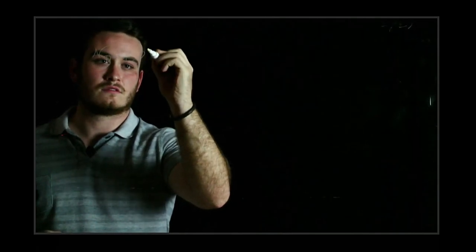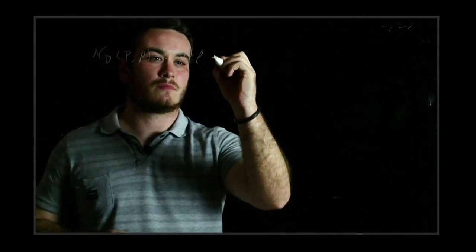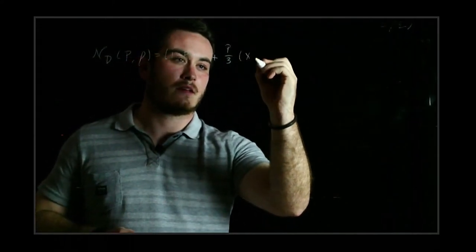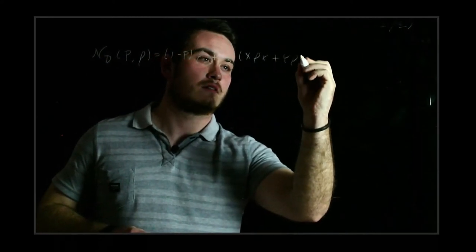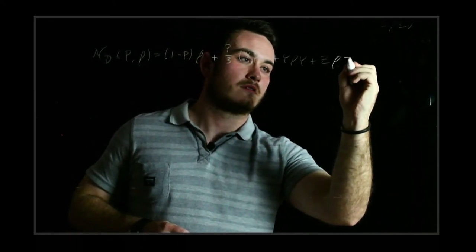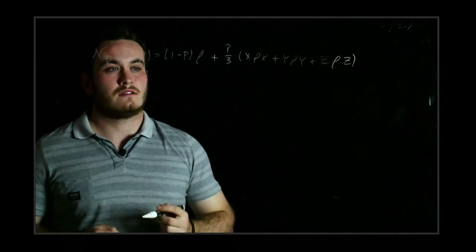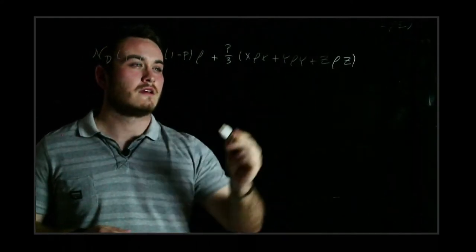We will now describe the error models affecting our quantum states. The depolarizing channel model and the Pauli channel model will be presented, and we will see that the depolarizing channel is included in the Pauli channel model, making the latter more general. The depolarizing channel is given by a transformation on quantum state rho: the state remains the same with probability 1 minus p, and it suffers an X, Y, or Z Pauli matrix transformation each with probability p divided by 3. This confirms it is symmetric, as each Pauli matrix is applied with the same probability.